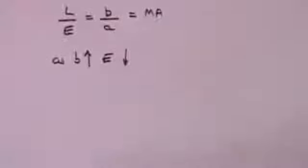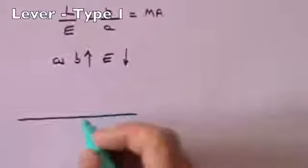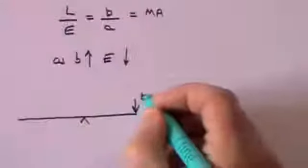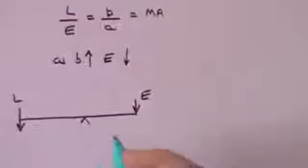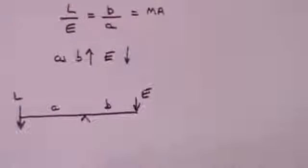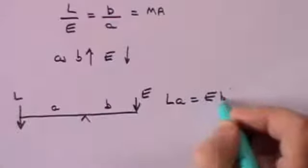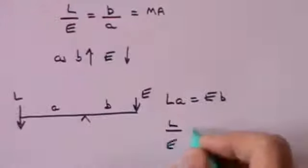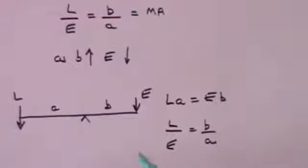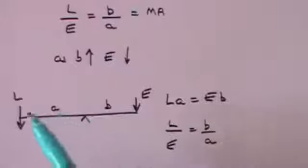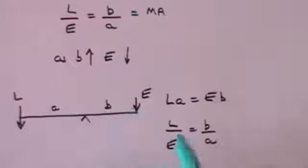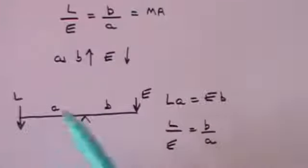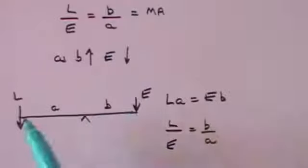There are three types of levers. The first type is where you have the fulcrum in the middle, the effort on one side, and the load on the other side, with distances a and b. Load times a equals effort times b, so load over effort equals b over a. Depending on how you design it, b over a could be greater than one — a good mechanical advantage — or less than one if b is very small and a very large, meaning you'd have to put in more effort than the load. Sensibly, you ensure b is greater than a.